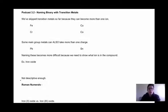Now that we've done naming with regular binary ionic compounds, we need to start throwing in the transition metals. The reason we've skipped them up to this point is because they can become more than one ion.